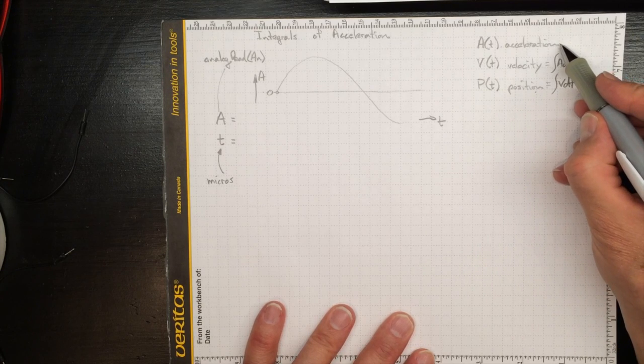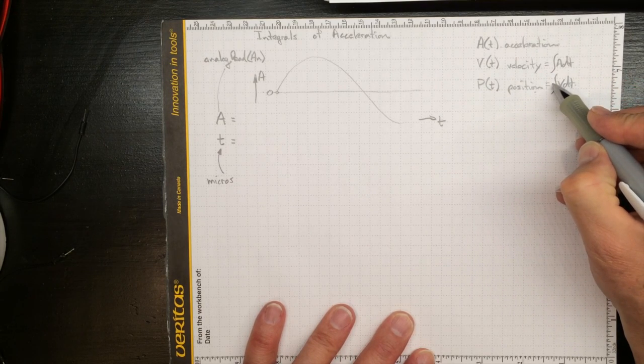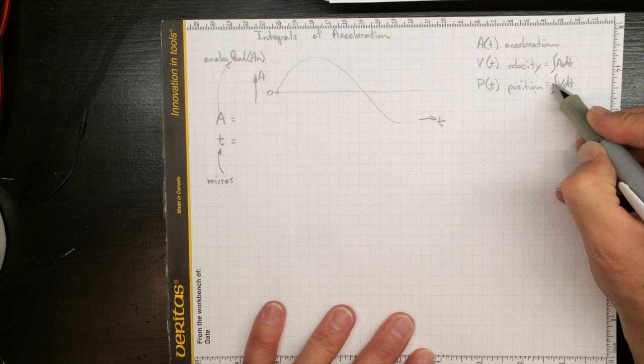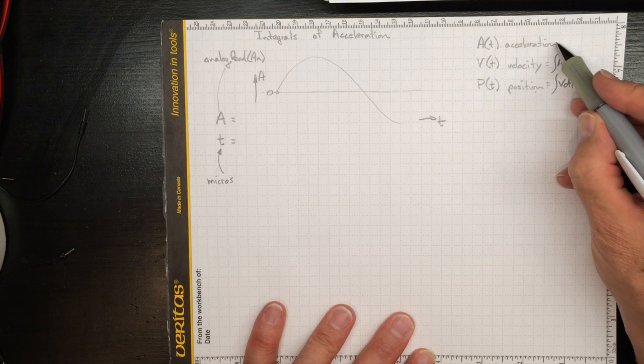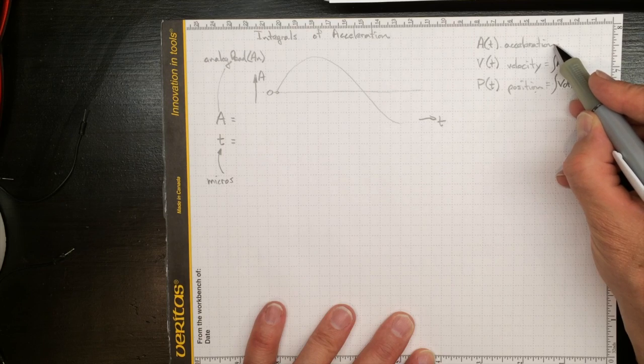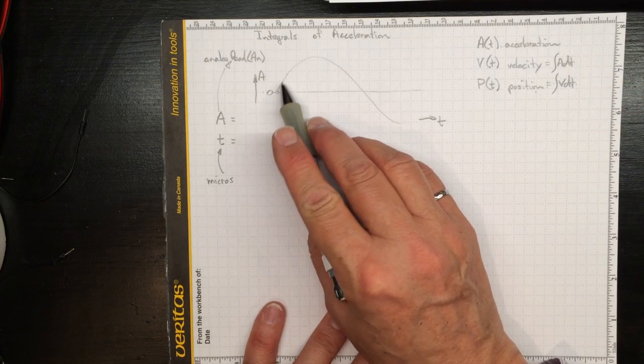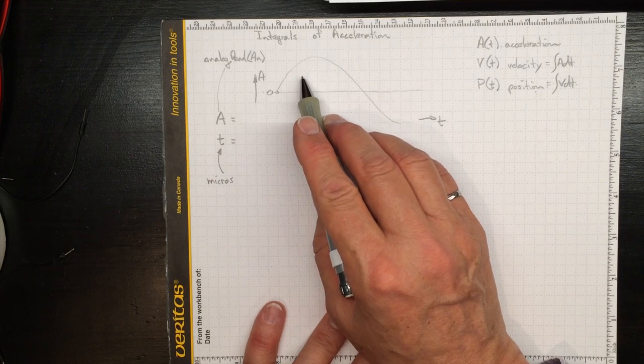Again, if we knew this analytically and we were good at calculus, we could do this with a pencil and paper. But in practical situations, we don't have a pencil and paper function for the acceleration. It's going to be something that we measure at different points in time.